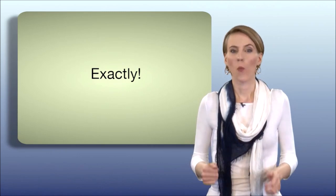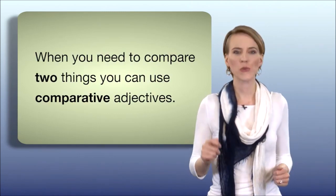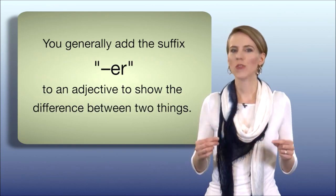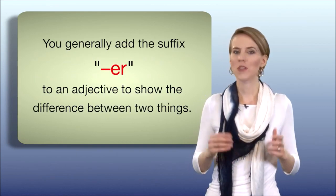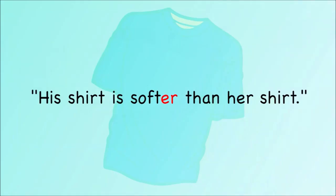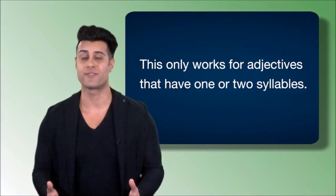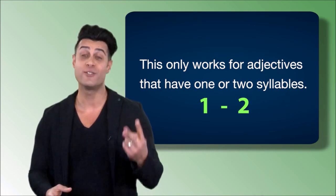Exactly! When you need to compare two things, you can use comparative adjectives. You generally add the suffix -ER to an adjective to show the difference between two things. For example: His shirt is softer than her shirt. This only works for adjectives that have one or two syllables.